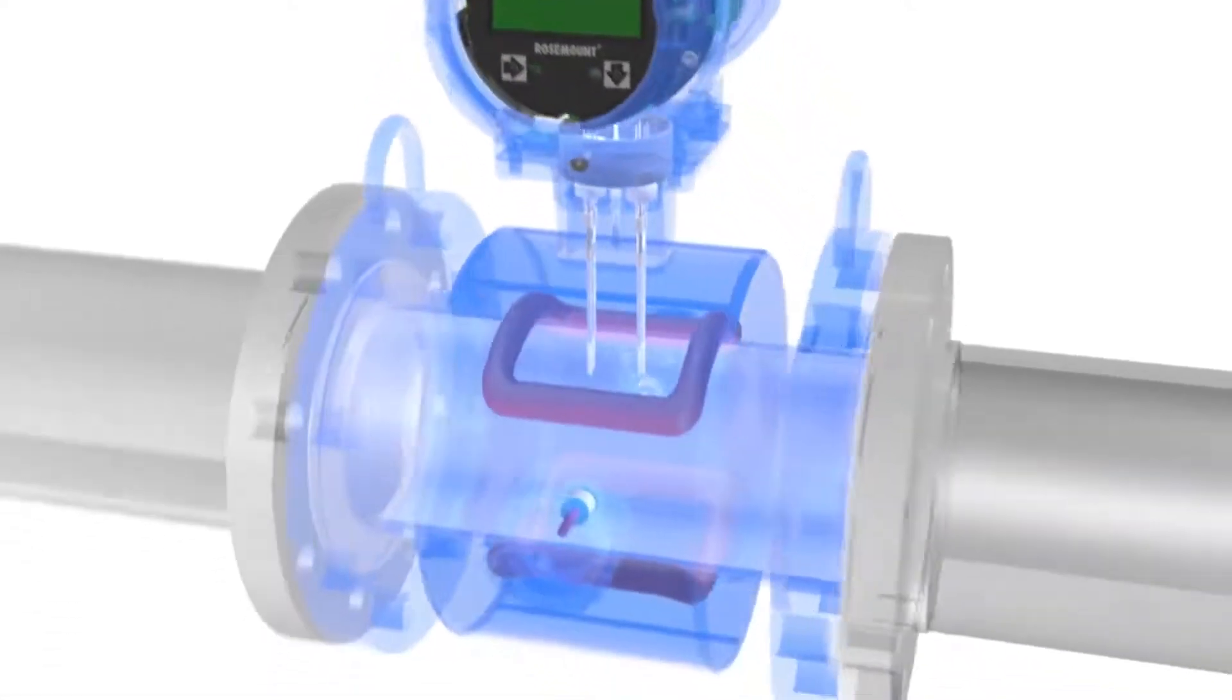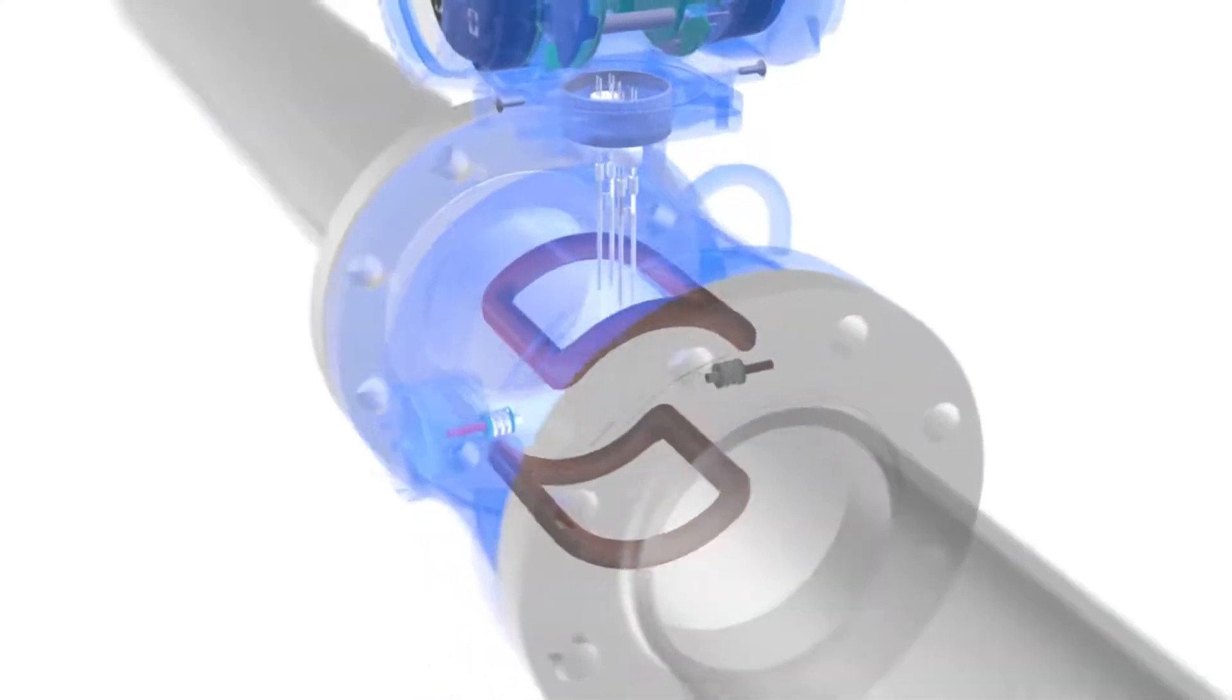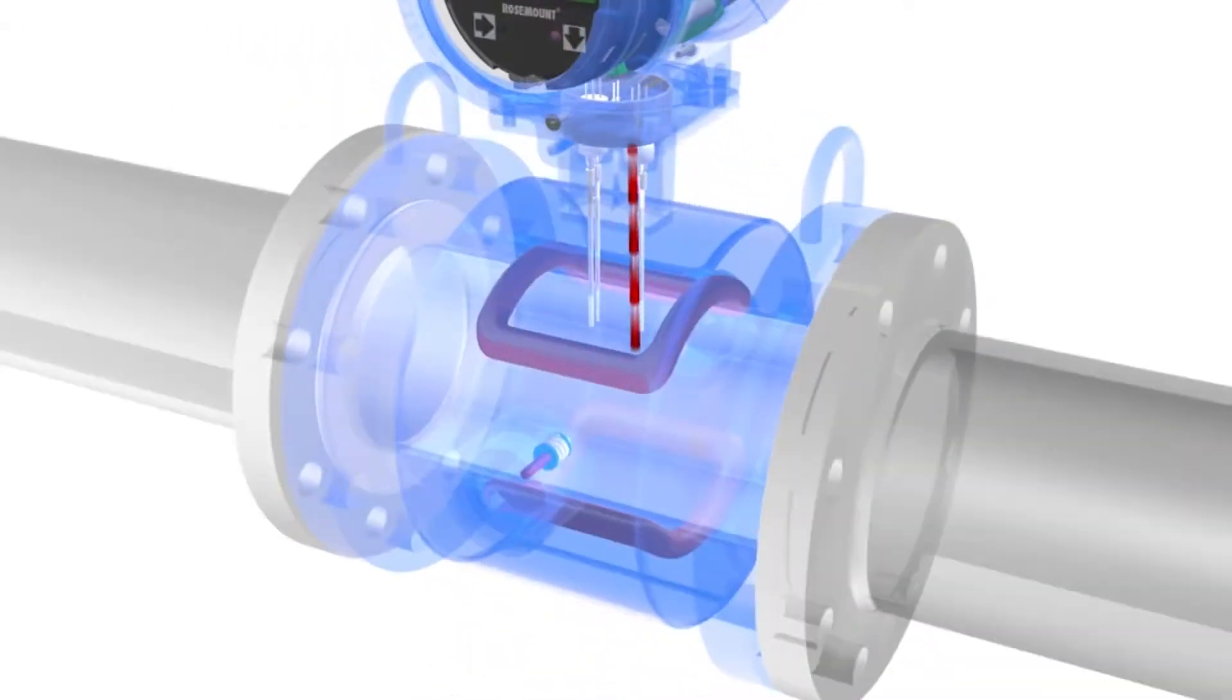To make the flow measurement, the magmeter utilizes a set of coils and a pair of electrodes. The magmeter's coils are driven by the transmitter with an applied current. Once powered, a magnetic field is formed between both coils.